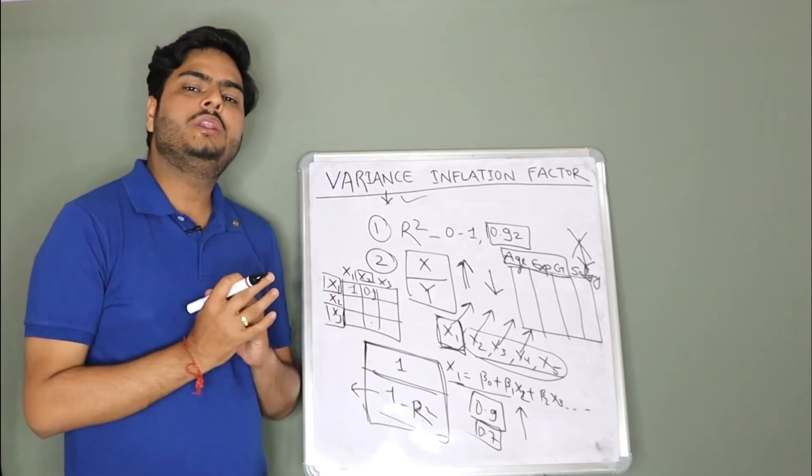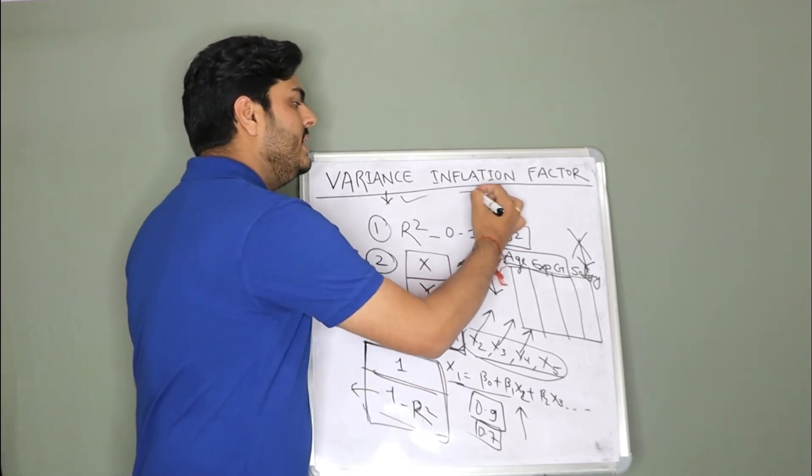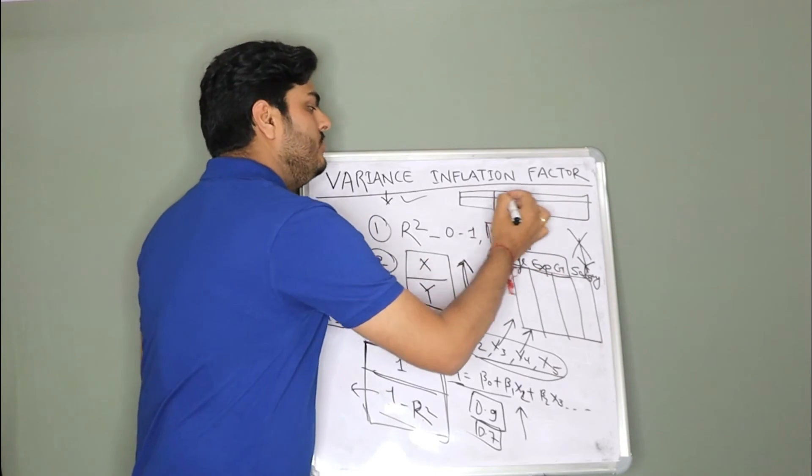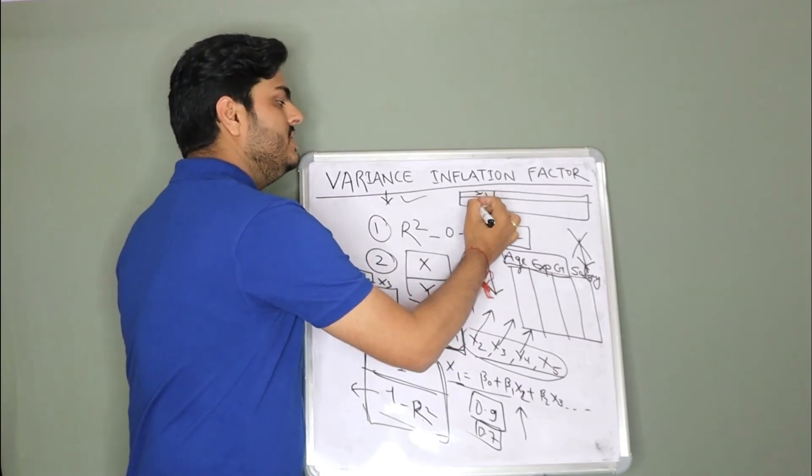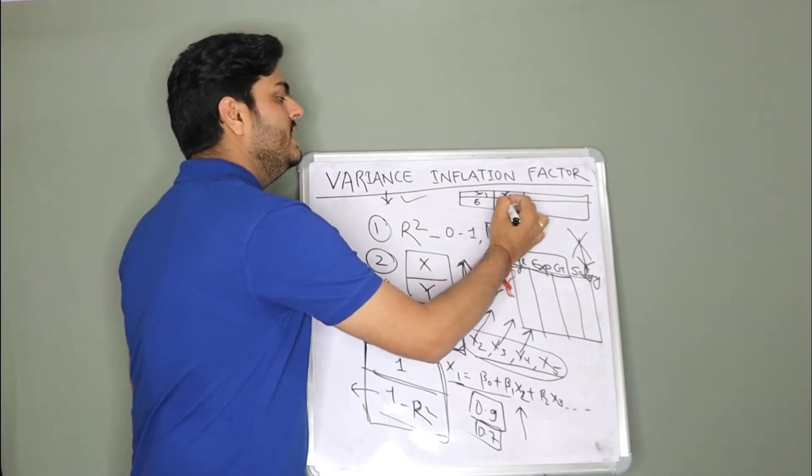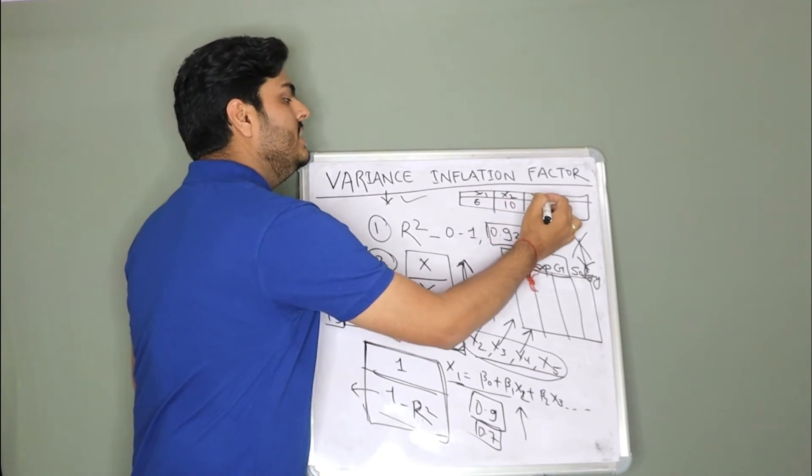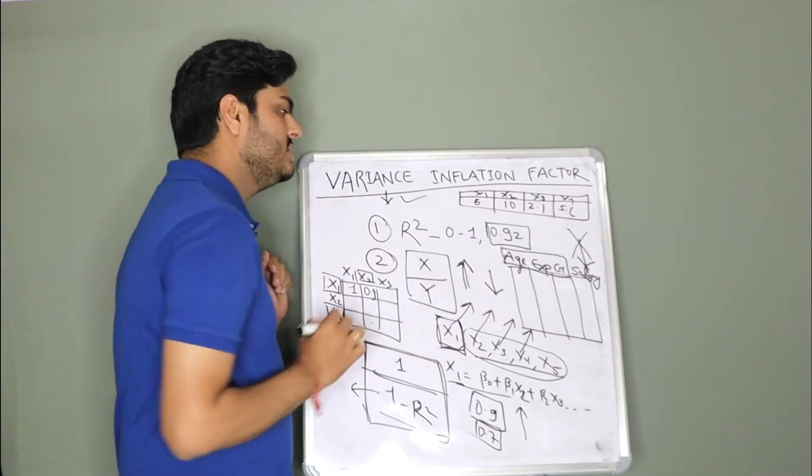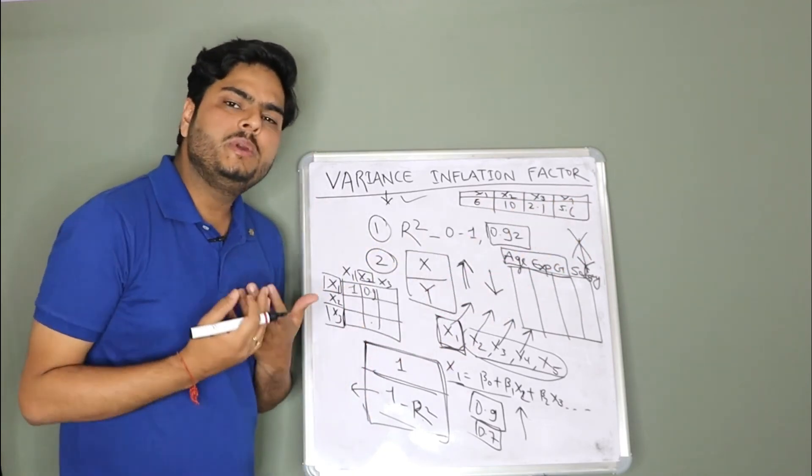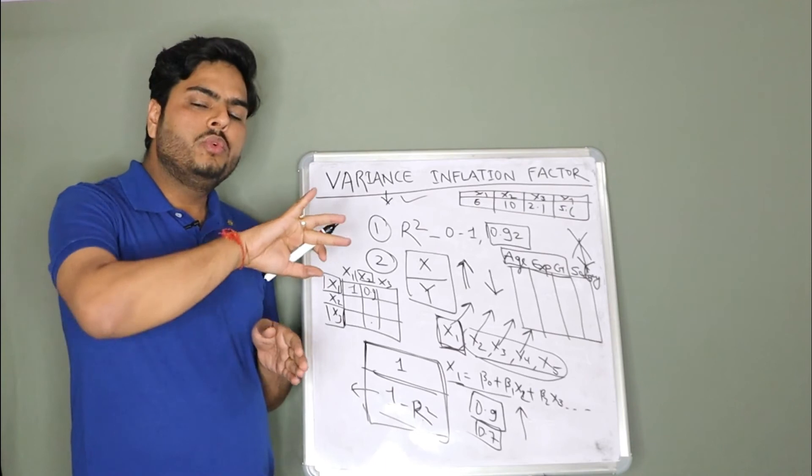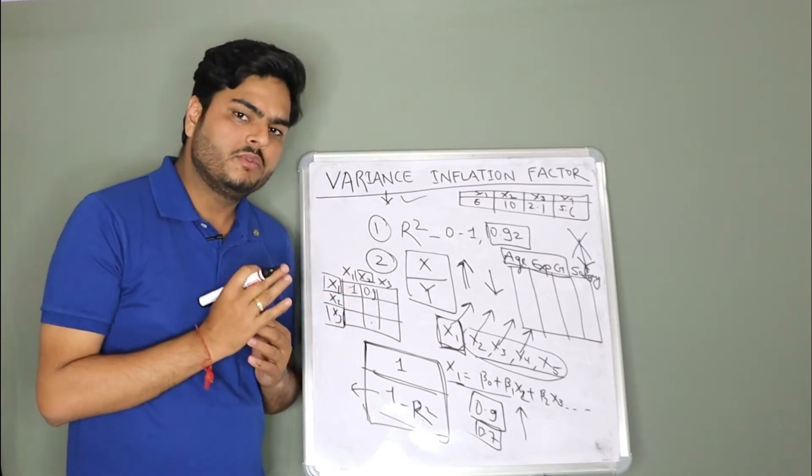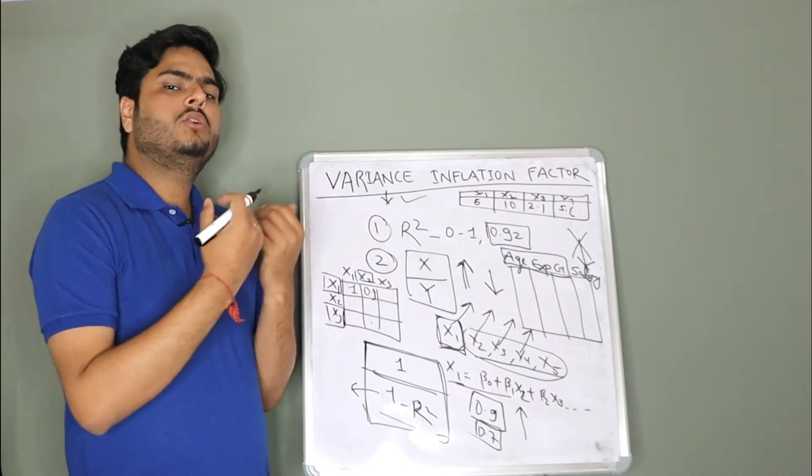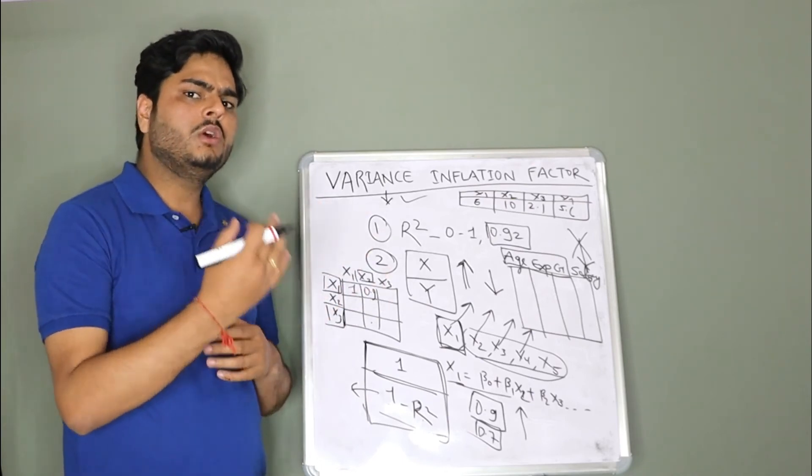And we get all the VIF values and we will have an output like this, where it will say for variable x1, VIF is 6. For variable x2, VIF is 10. For variable x3, VIF is 2.1. For variable x4, VIF is 5.6. And traditionally, typically, the range at which we start removing the variable is 5. So any variable with VIF value greater than 5, we take that out from the analysis or model training.